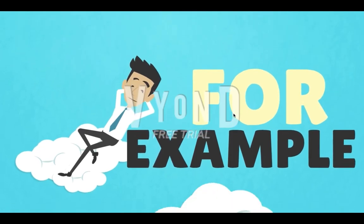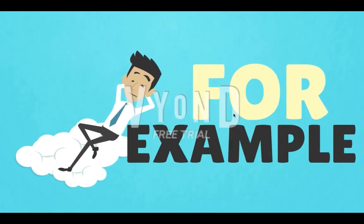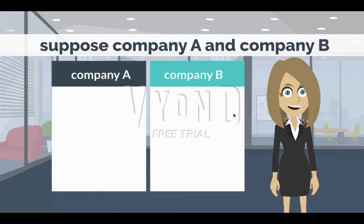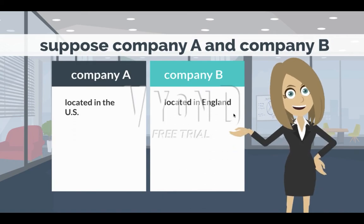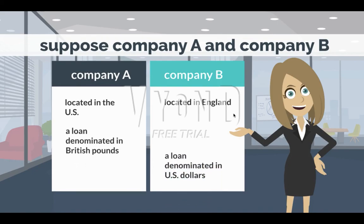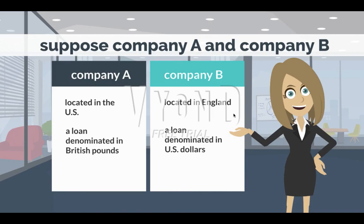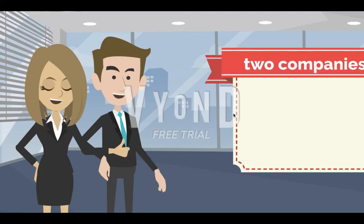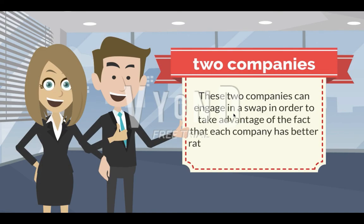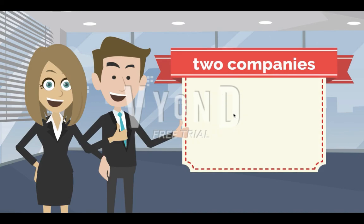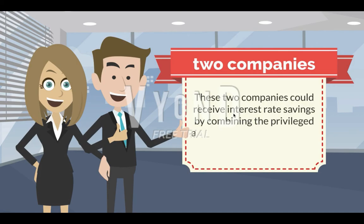As a first example, suppose Company A is located in the U.S. and Company B is located in England. Company A needs to take out a loan denominated in British pounds and Company B needs to take out a loan denominated in U.S. dollars. These two companies can engage in a swap to take advantage of the fact that each company has better rates in its respective country, receiving interest rate savings by combining the privileged access they have in their own markets.